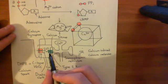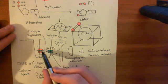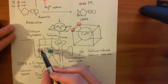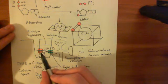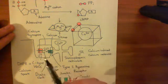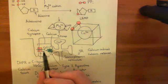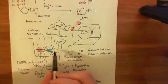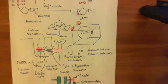The type 2 ryanodine receptors will close. In addition, the L-type voltage-gated calcium channels will also start to close — the action potential will pass and, more importantly, the L-type channels will inactivate after a certain period of time. So both of these two channels are closing, meaning you're not getting any more calcium coming in from the extracellular space and no calcium released from the SR. That's stopped the calcium going up any further, but how do we actually take it down?